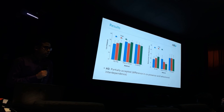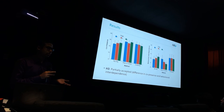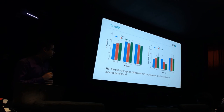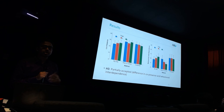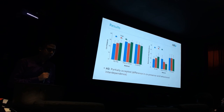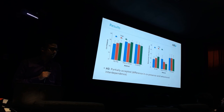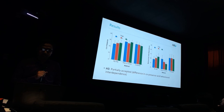The third hypothesis was also partially accepted. We noticed that there was no overall effect on social presence, but on a couple of subscales — co-presence and behavioral interdependence — we noticed a significant occurrence, and our conformal method performed the best. For co-presence, it was significantly better than zigzag, and for behavioral interdependence, it was significantly better than the steer-to-center method.